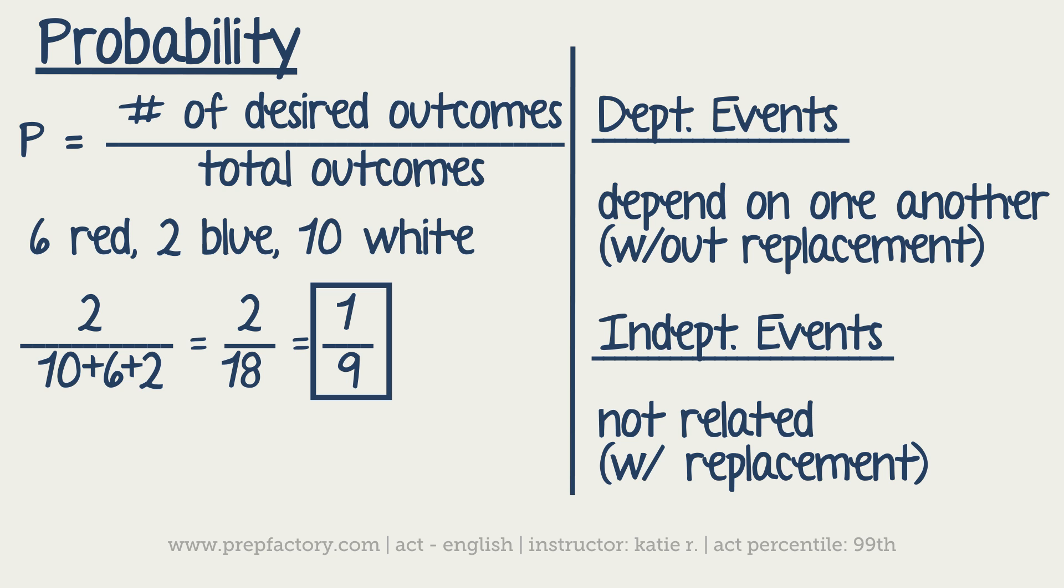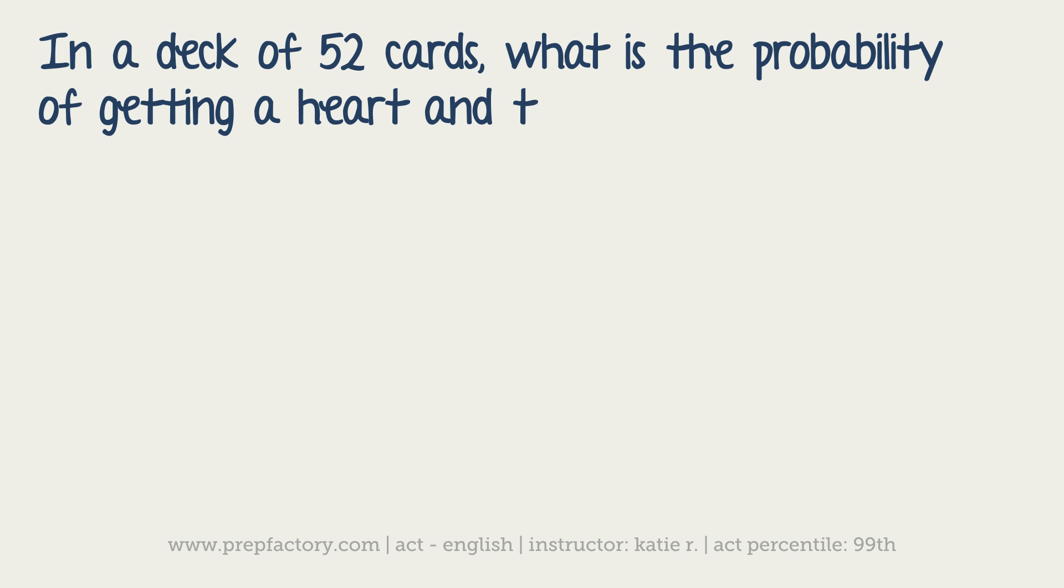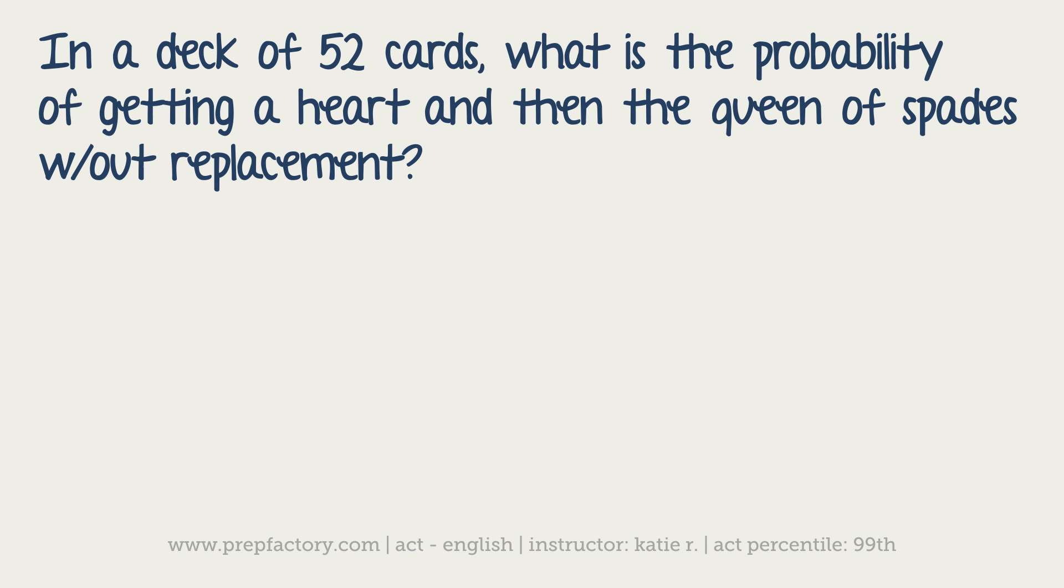In either case, however, if you're looking at two separate events, you're going to multiply your probabilities together to tell you what the probability of the two things happening is. So let me go ahead and give you a proper example. Okay, so in a deck of 52 cards, what is the probability of getting a heart and then the queen of spades without replacement? So notice it said without replacement. So these are dependent events.